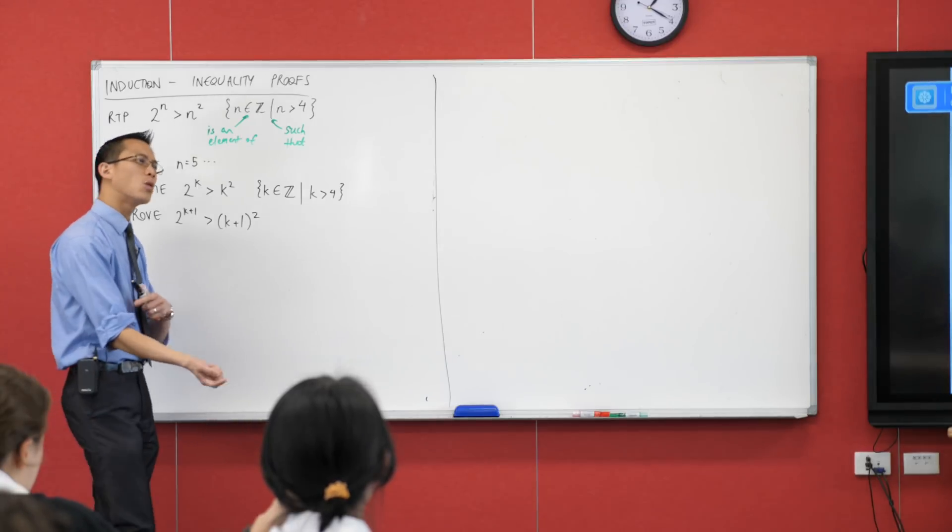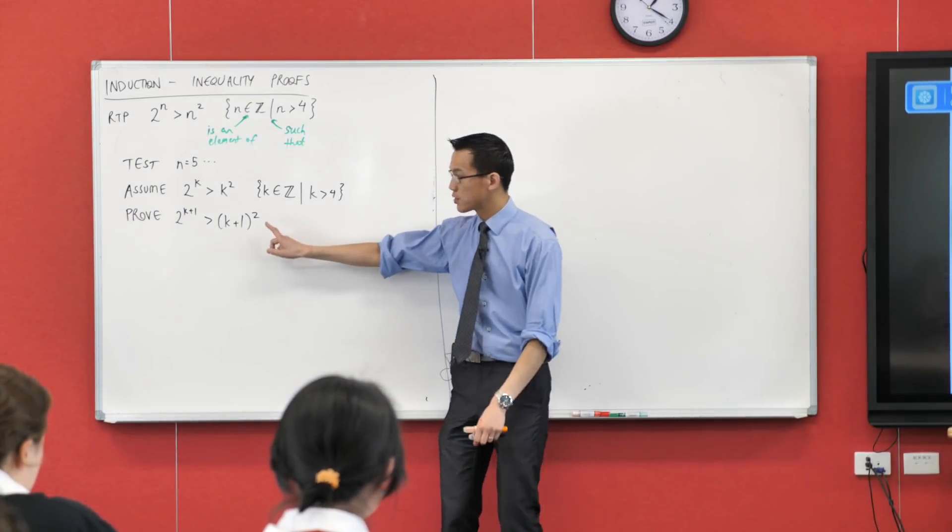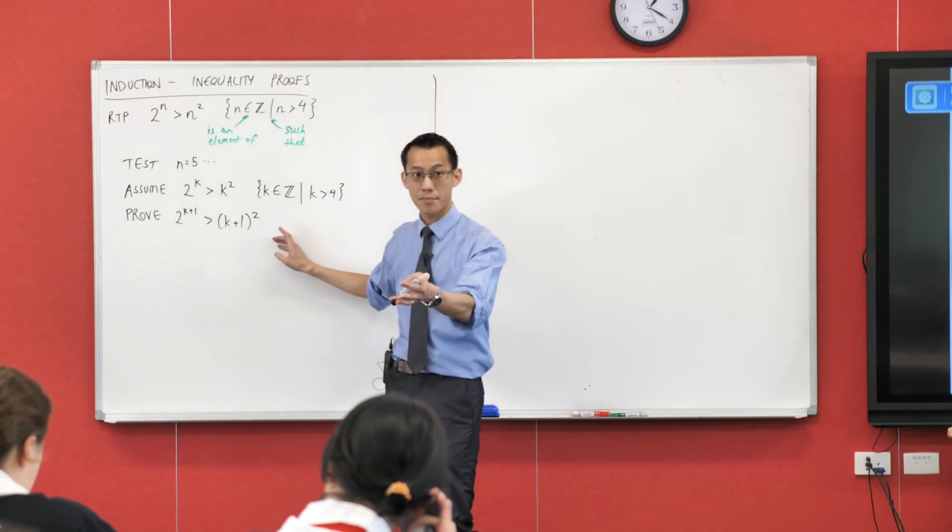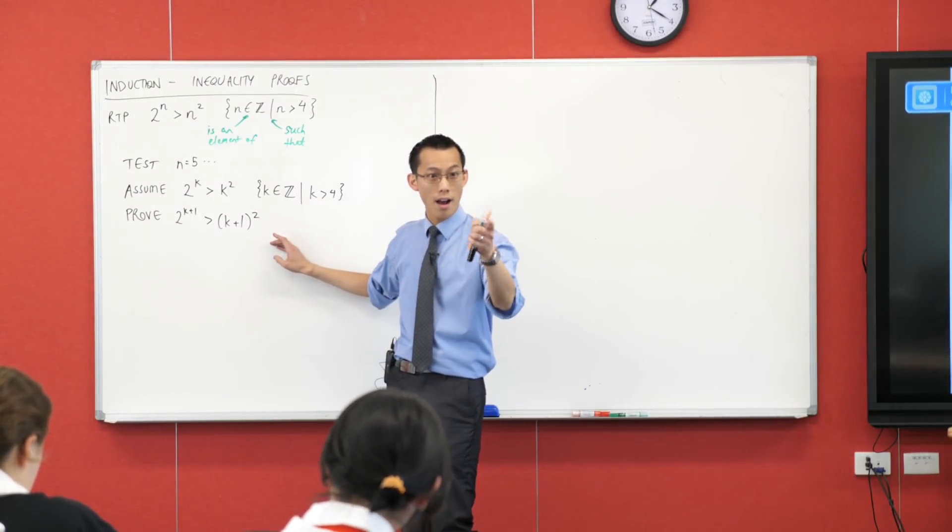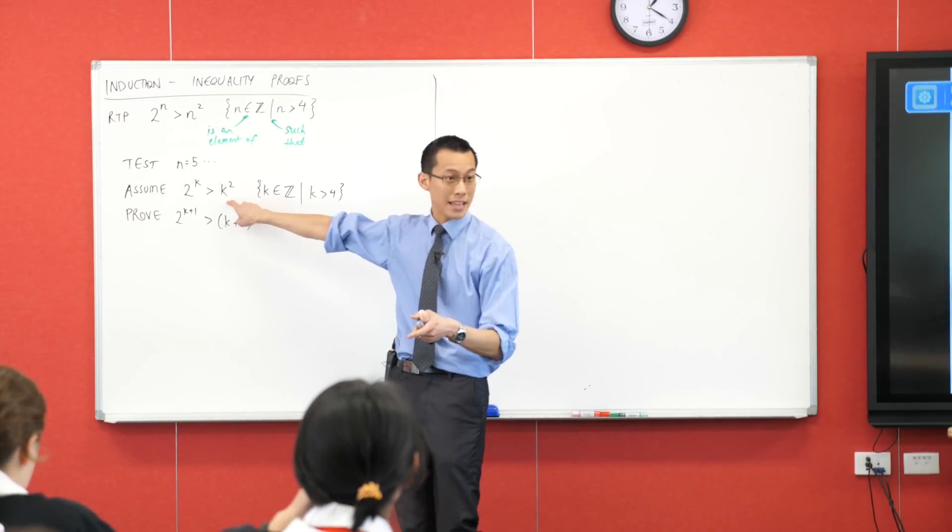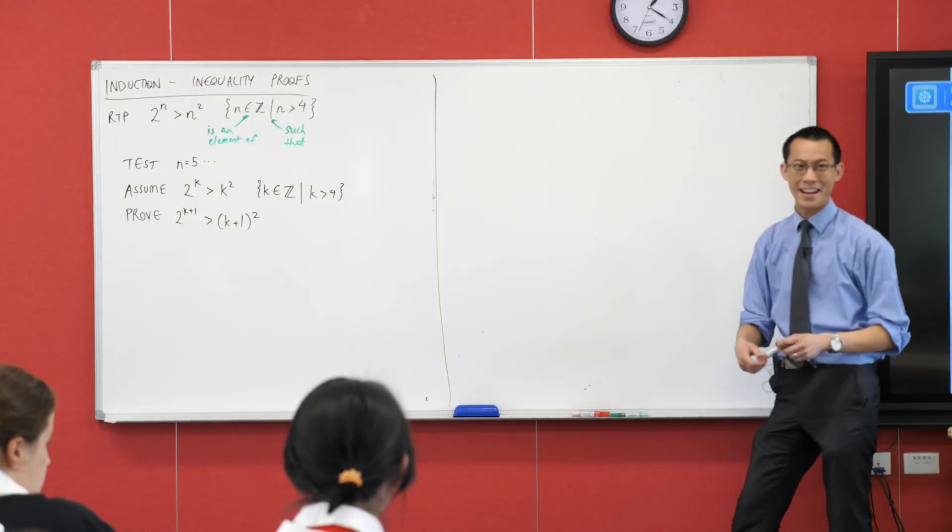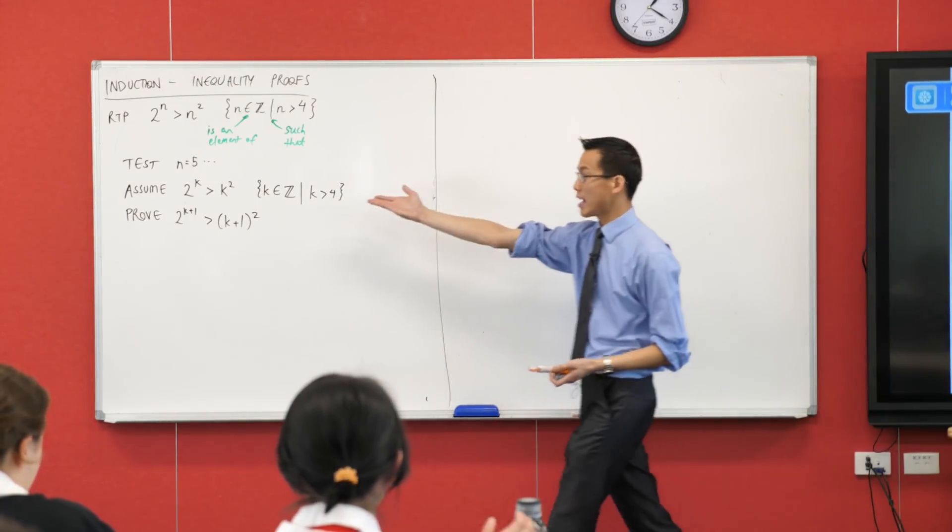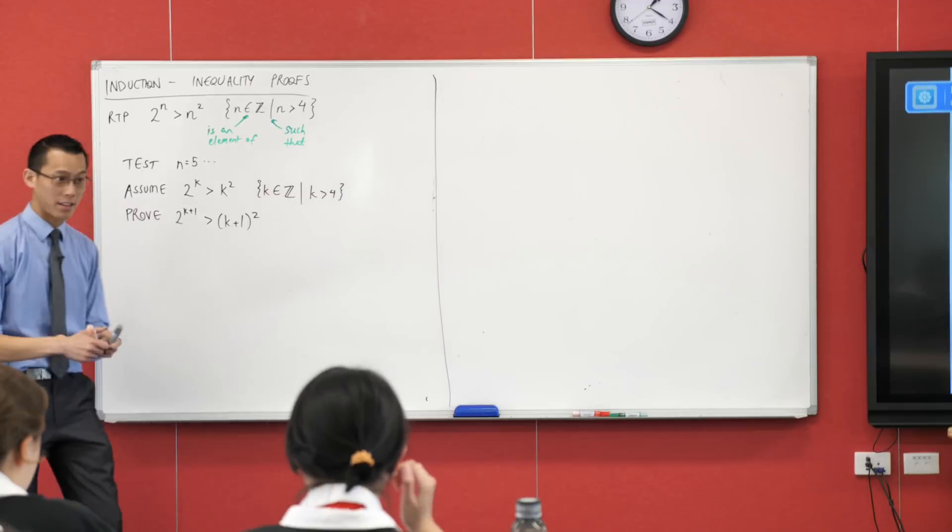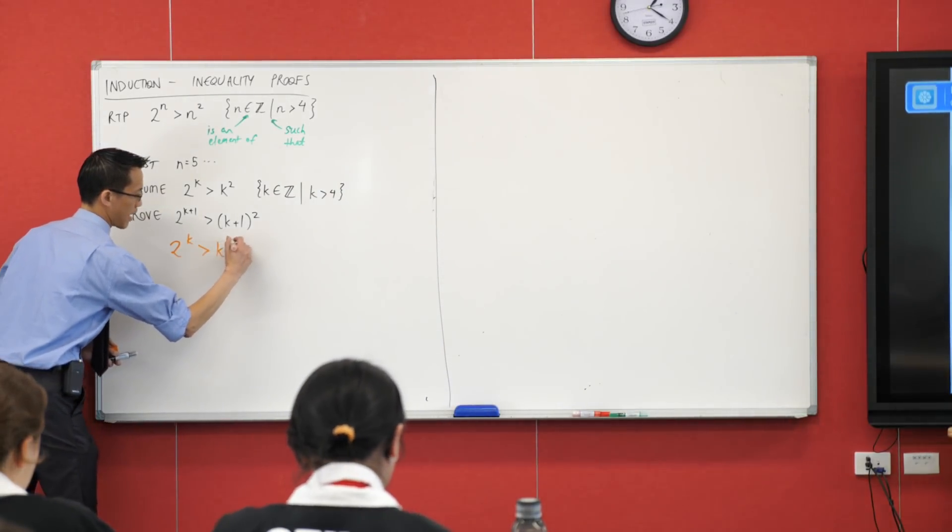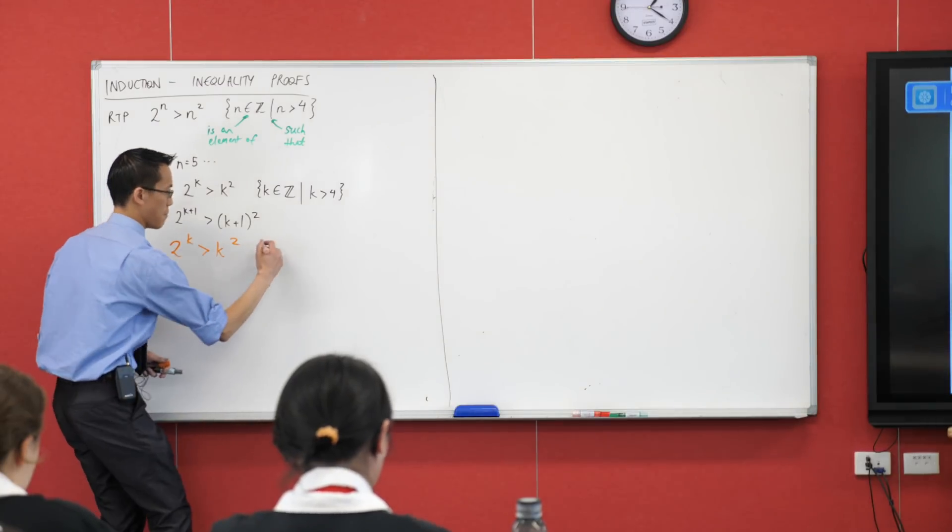I suggested there was also another technique that you can use, which doesn't involve starting here. It involves starting somewhere else. Have you got it there in your paper? What does it say? Begin from the assumption. That's this guy here. So, as Jacob so enthusiastically read out, we're going to begin right away by just writing down 2 to the k is greater than k squared. We're going to say this is by assumption.